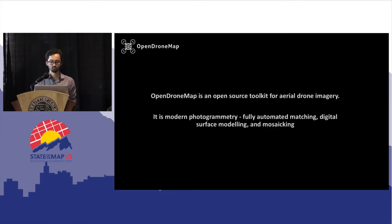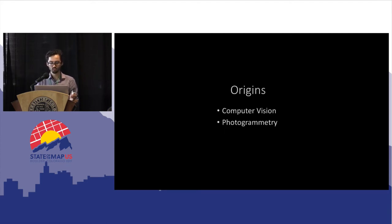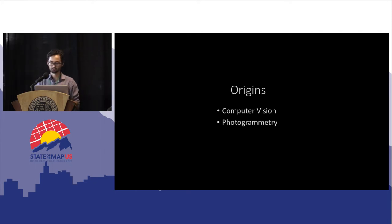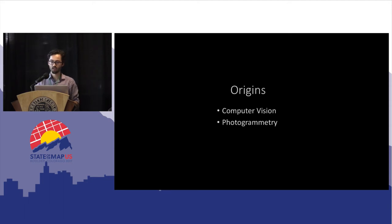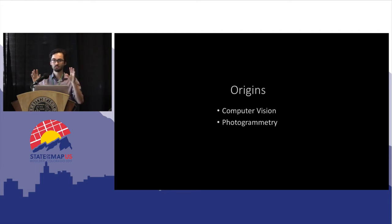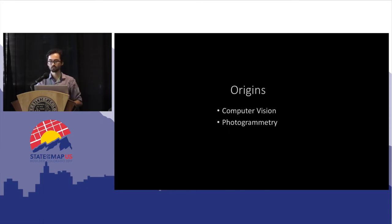Open DroneMap is an open source toolkit for processing what drones can do, and where does that start? Computer vision and photogrammetry — it's a blend of the two. How do we enable computers to navigate and understand the world? It depends on stereo vision, much like we do. We have two eyes, we can see in 3D, and that's one of the core concepts in Open DroneMap for developing 3D space which can create our maps.